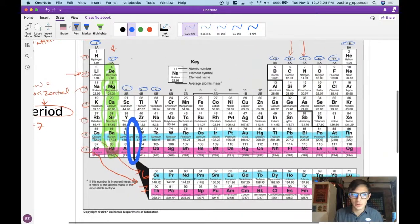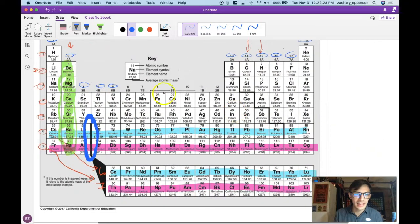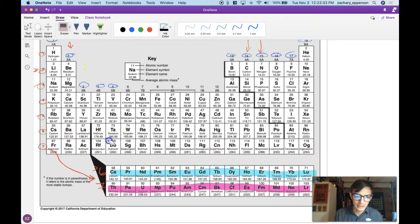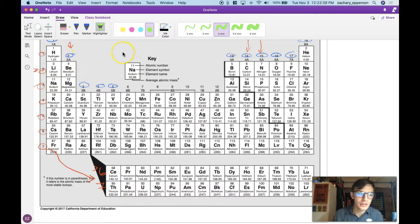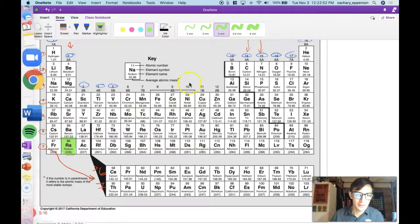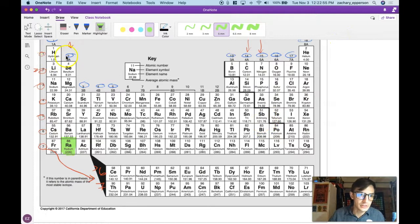If I was to give you a quiz here, I'll hide the word group and period and see if you can remember. If you'll find the element that's in group two, period seven. That should be that element right there radium, Marie Curie's element. And that's because group two is right there, the vertical column and period seven is down there.